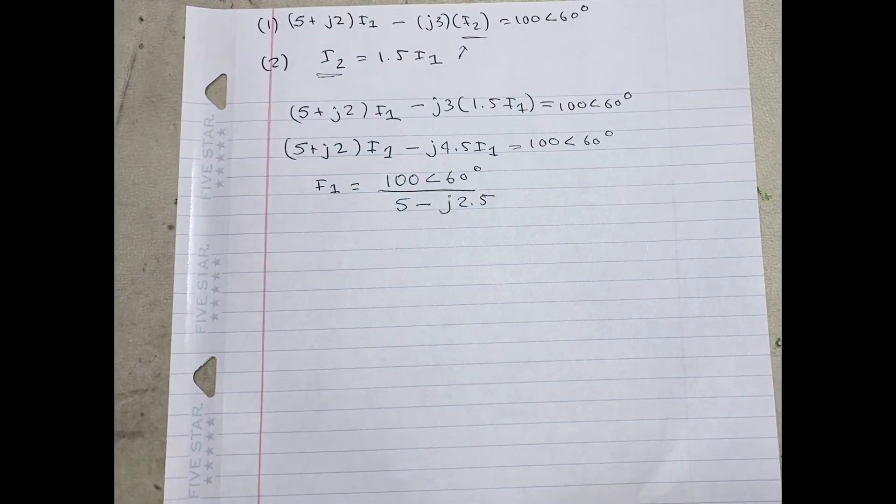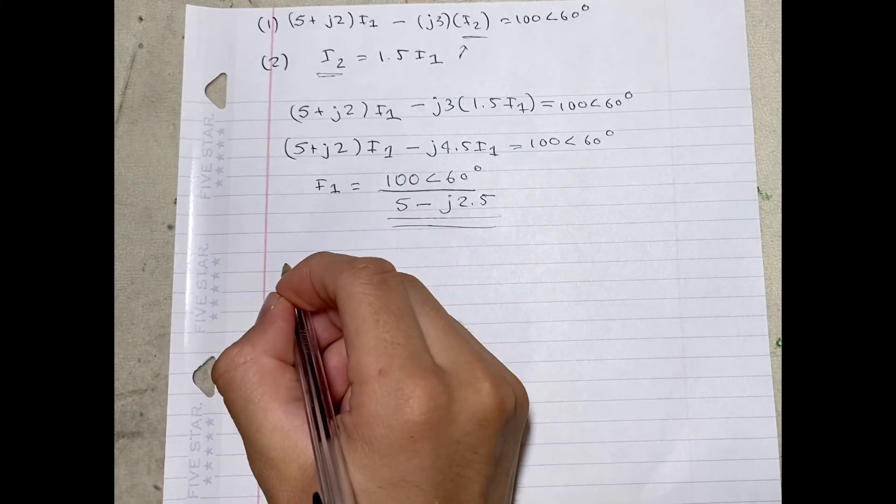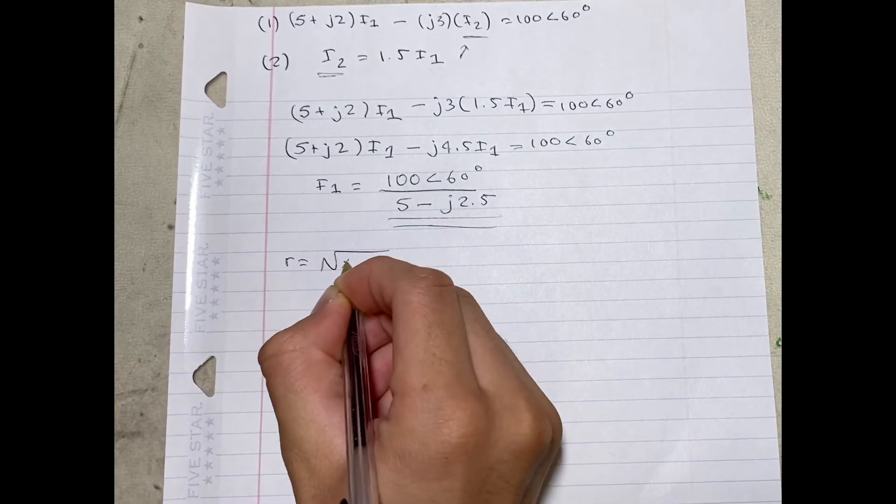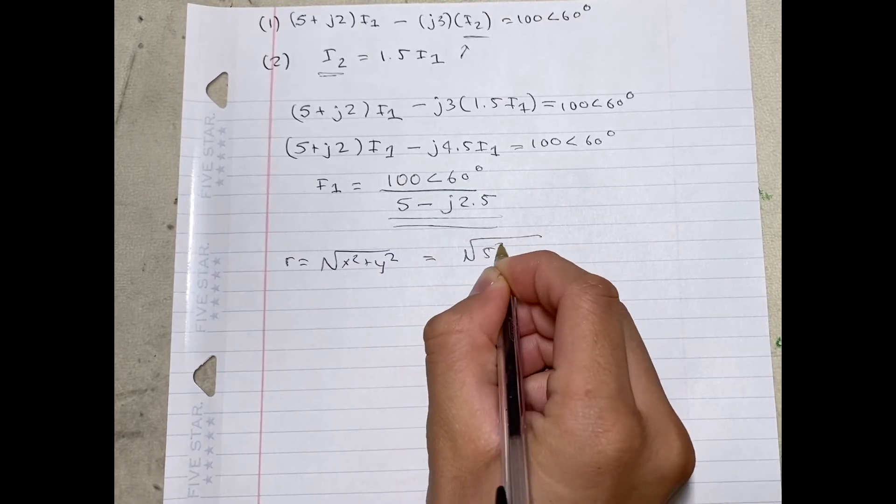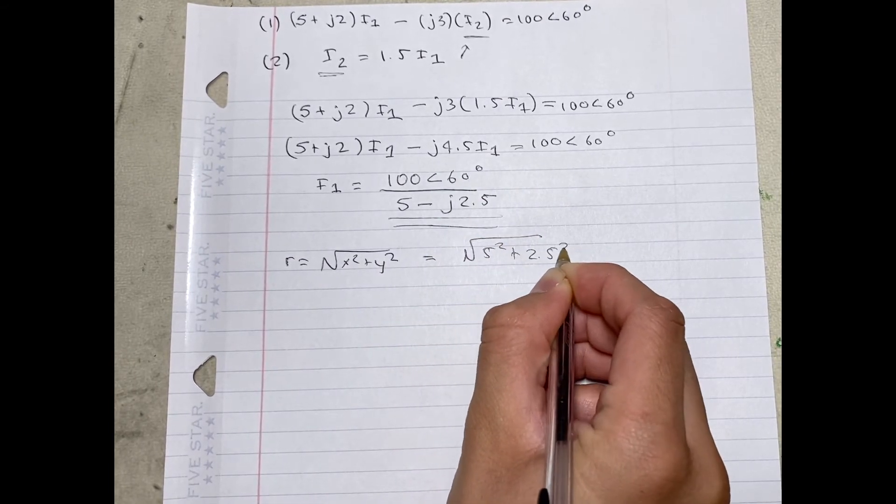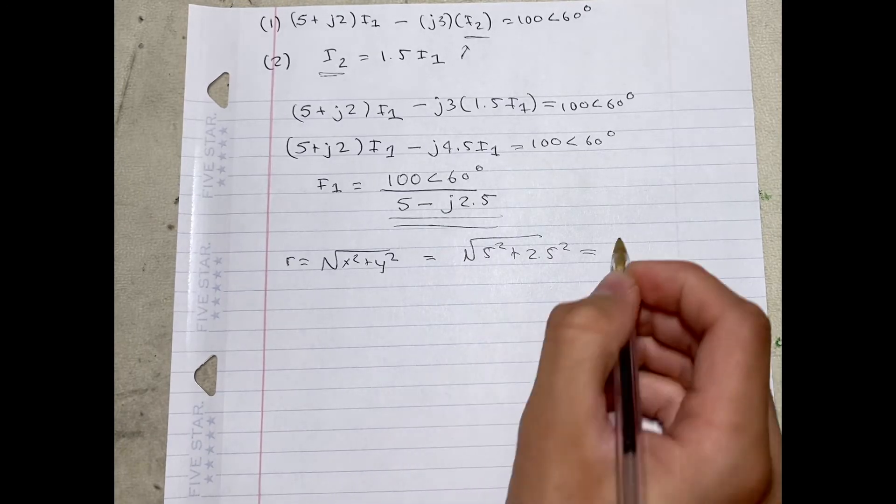We now need to convert the rectangular coordinates to polar coordinates, using the equation R equals square root of x squared plus y squared, where x is 5 and y is 2.5. This is going to give us 5.59.